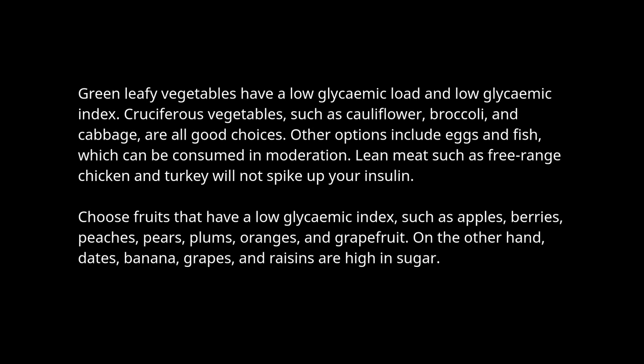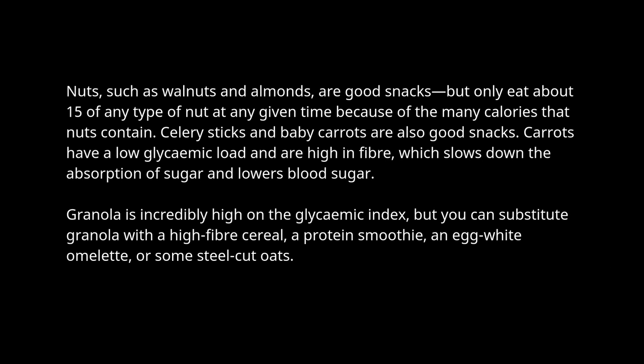Lean meat such as free-range chicken and turkey will not spike up your insulin. Choose fruits that have a low glycemic index, such as apples, berries, peaches, pears, plums, oranges, and grapefruit. On the other hand, dates, bananas, grapes, and raisins are high in sugar. Nuts such as walnuts and almonds are good snacks, but only eat about 15 of any type of nut at any given time because of the many calories they contain. Celery sticks and baby carrots are also good snacks. Carrots have a low glycemic load and are high in fiber, which slows down the absorption of sugar and lowers blood sugar.